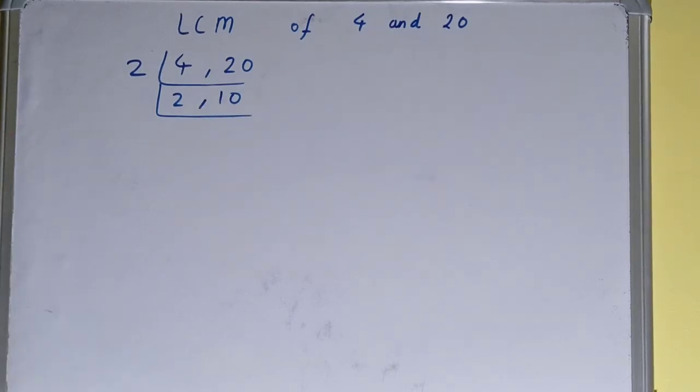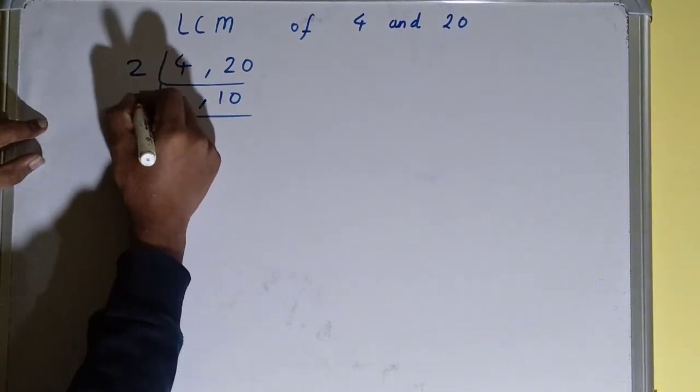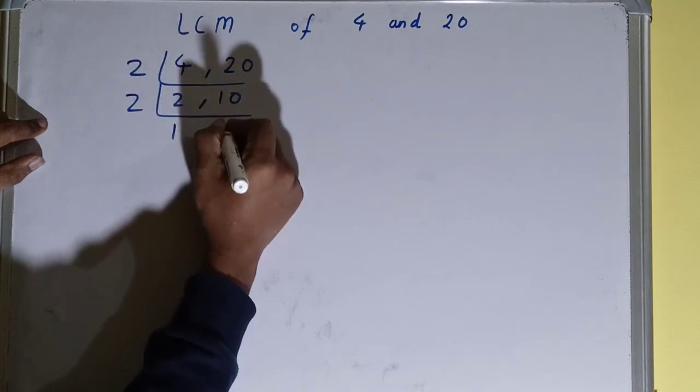Again, check if any of the numbers is divisible by 2. Again, both the numbers are divisible, so divide it. We'll be getting 1 comma 5.